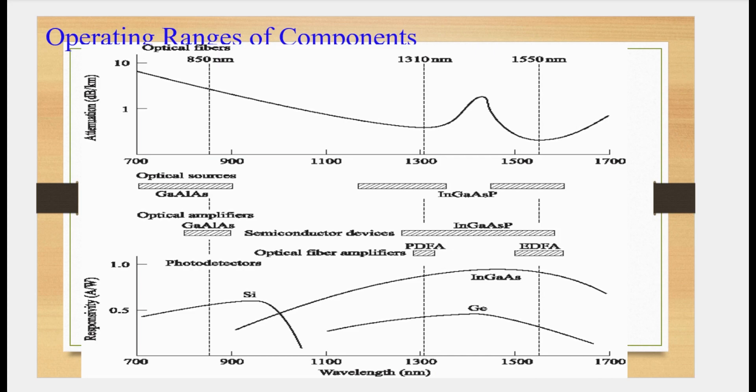In this graph, at the same time we can see the attenuation in optical fiber, then optical source which is available, then responsivity of detector, and efficiency of silicon germanium and indium gallium arsenide photo detector. I hope this is very important information you have to remember whenever you want to design a fiber optic communication system. Thank you.